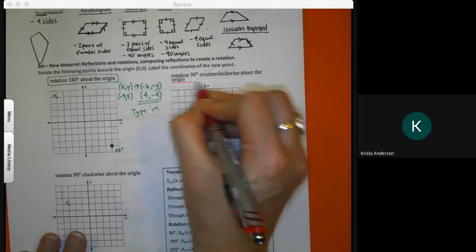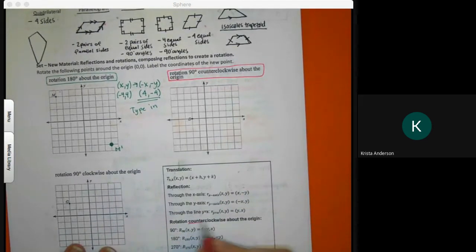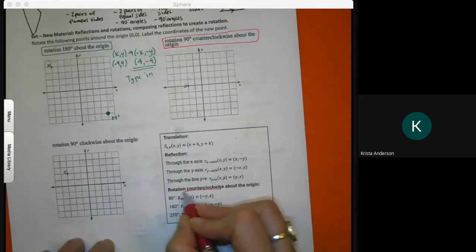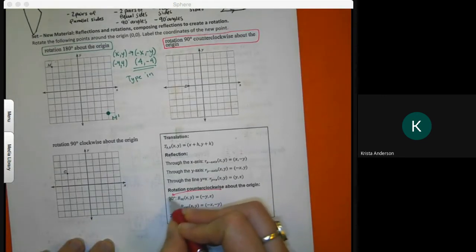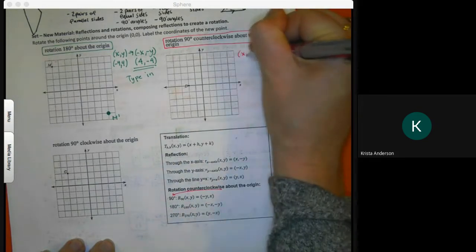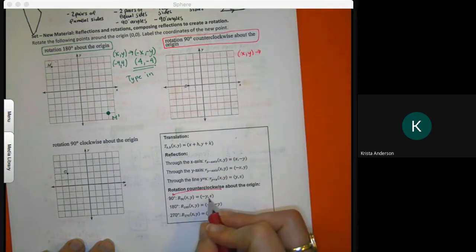90 degrees counterclockwise. When I look for my counterclockwise section on my green note card, 90 degrees, that means I'm going to have xy goes to negative y comma x.